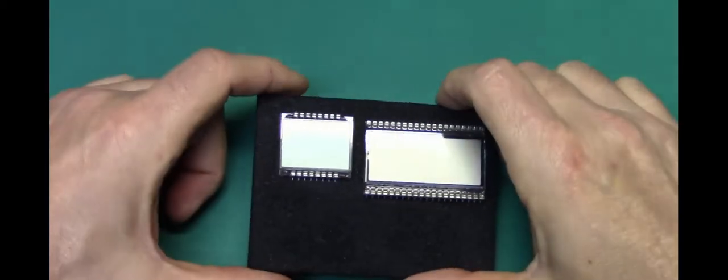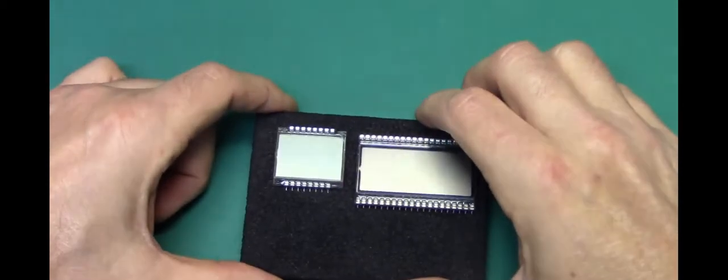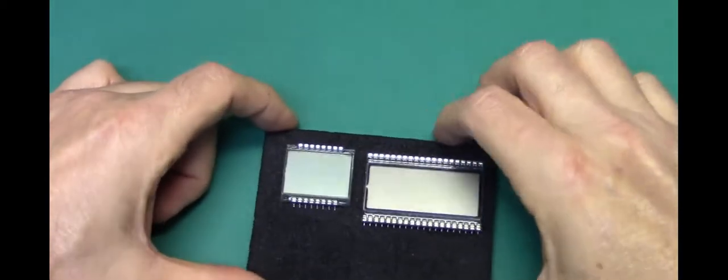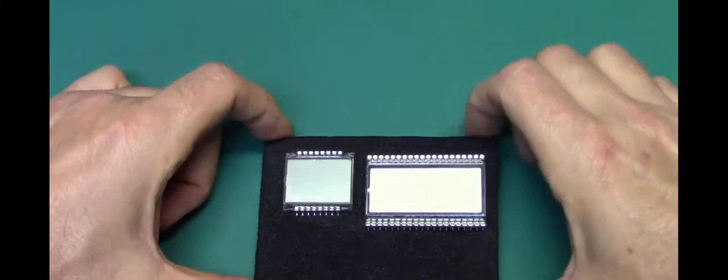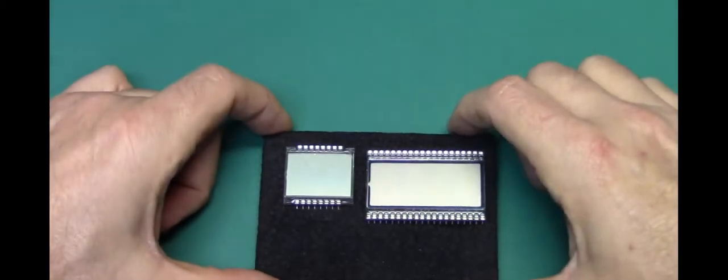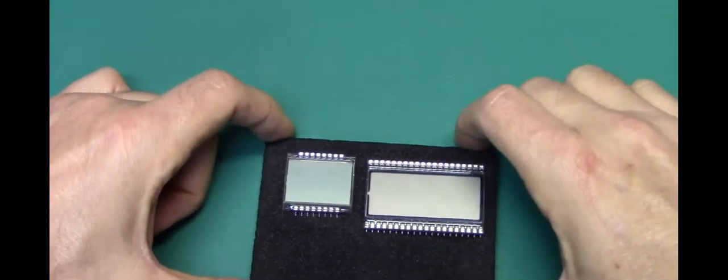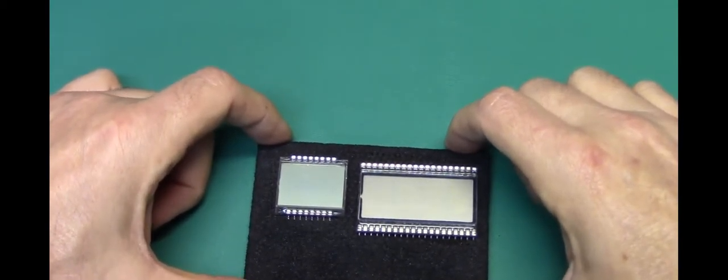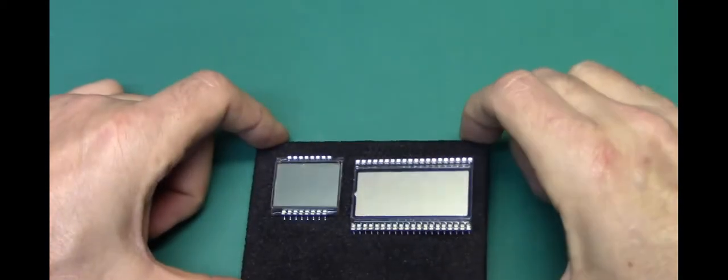The nice thing about liquid crystal displays is that they use very little power because they work on a field effect. There's actually no current that flows through the device but perhaps a little bit of leakage current. So they tend to be a very energy friendly component. That's why they're so prevalent now in all the phones and computer monitors. There are of course color liquid crystals and backlit ones and passive devices, and these are not backlit, they use the ambient light.